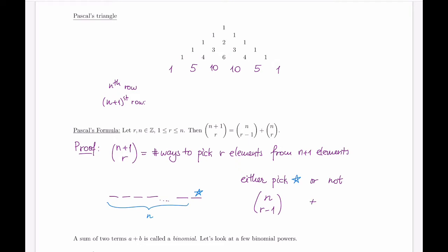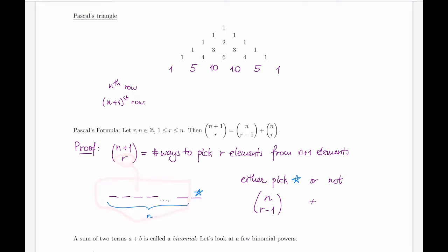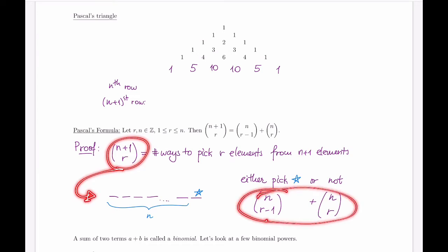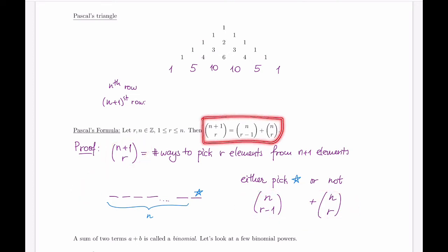The other way to form my collection of r elements from n+1 elements is to not pick this special element at all. Then my consideration is only around the n remaining elements and I have to pick all r elements from there, giving n choose r. So the number of ways to pick r elements from n+1 equals n choose r−1 plus n choose r — which is exactly Pascal's formula. Because the answers have to be equal, we have our formula.